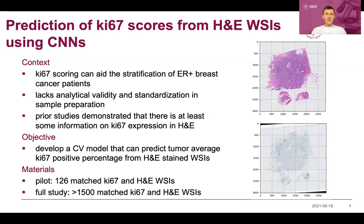The context of our study is that we would like to predict KS67 scores from H&E stained images instead of the immunohistochemistry stain. We're interested in that because KS67 scoring can aid the stratification of ER-positive breast cancer patients — it's used in some countries to decide how aggressive the treatment regimen should be with regards to chemotherapy.